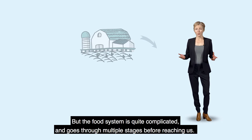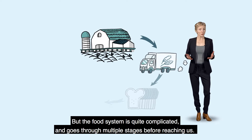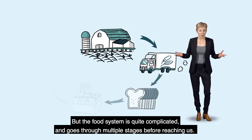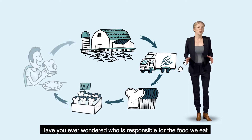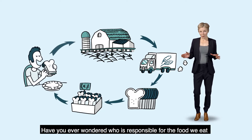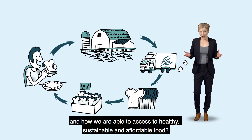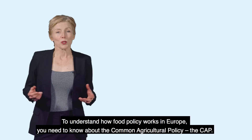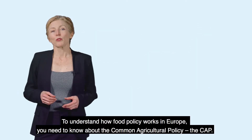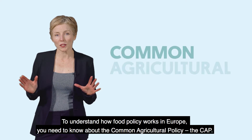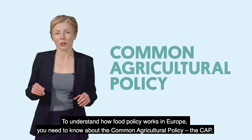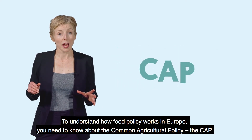But the food system is quite complicated and goes through multiple stages before reaching us. Have you ever wondered who is responsible for the food we eat, and how we are able to access healthy, sustainable and affordable food? To understand how food policy works in Europe, you need to know about the Common Agricultural Policy, the CAP.